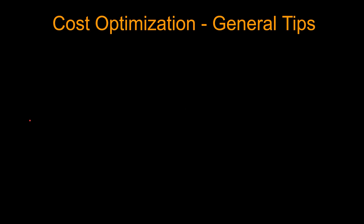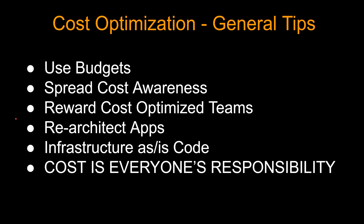Here are some other general tips. Use budgets, even per application if needed. Spread cost awareness in your organization using town halls and other calls. Reward cost-optimized teams. Rearchitect your application to use cheaper cloud-native services — maybe you are running a microservice in an EC2; why not convert it to a Lambda and save a lot of money? Use infrastructure as code such as CloudFormation or CDK, which saves time and money when things go wrong, especially if you have to spin up a DR environment, and you can easily distribute good CloudFormation or CDK scripts across your org.